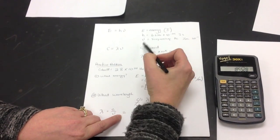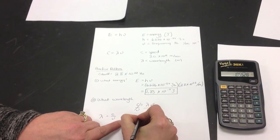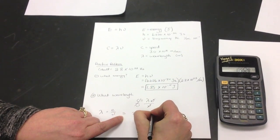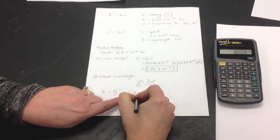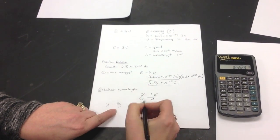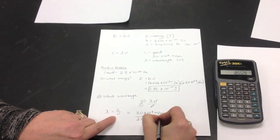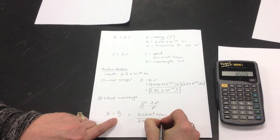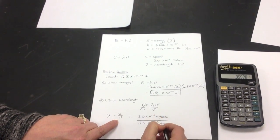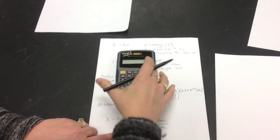So, now we can plug this in. C is my speed. Since we're talking about light, it's going to be 3.0 times 10 to the 8th meters per second, divided by my frequency, which is right up here, 2.8 times 10 to the 22nd hertz. Again, I'm going to write just per second, so you can see that those cancel, and you'll end up with the meters that you want.